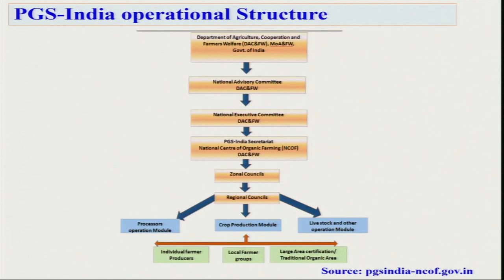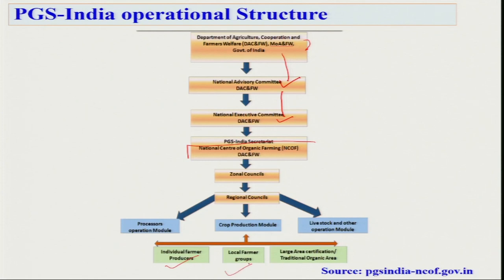Under PGS, people in similar situations access, inspect, and verify the production practices of each other, and collectively declare the entire holding of the crop as organic. It is facilitated by the Ministry of Agriculture. The structure runs under the Department of Agriculture, Cooperation and Farmers Welfare, with a national advisory body and national executive committee, then the PGS India Secretariat at NCOF Ghaziabad. There are lots of regional centres of NCOF because only one centre cannot handle the PGS system for all of India. Procedures include individual farmer certification, local group certification, and large area or traditional organic area certification.